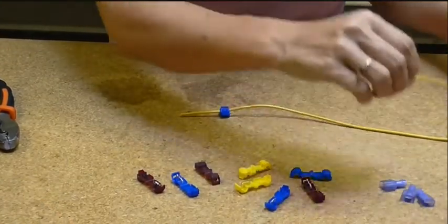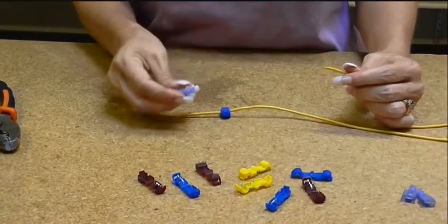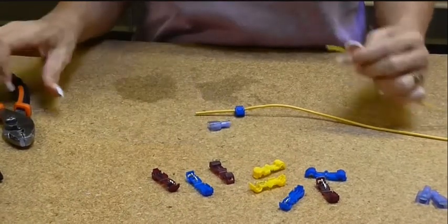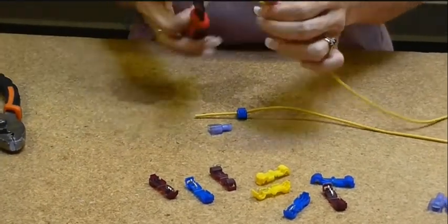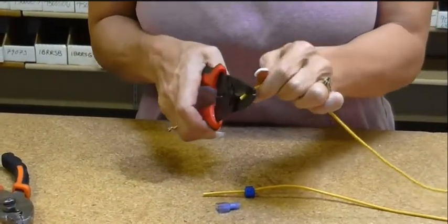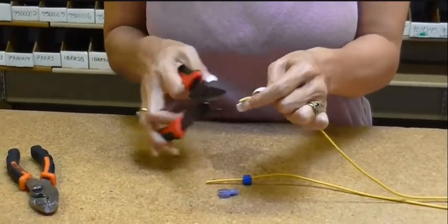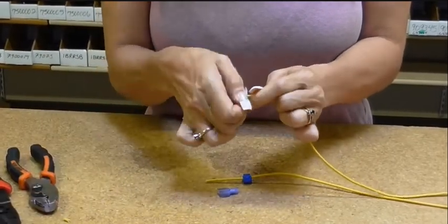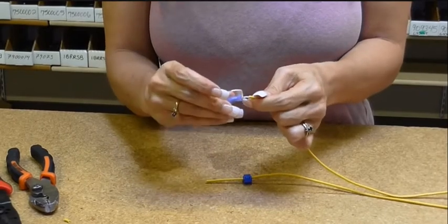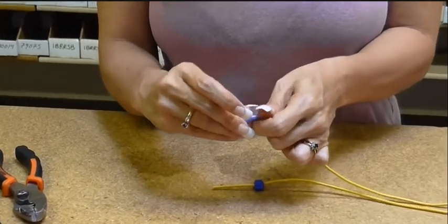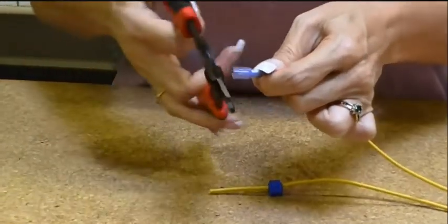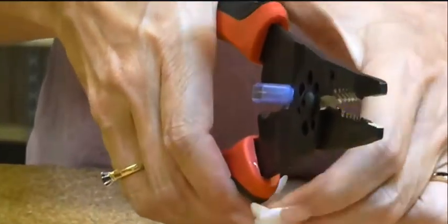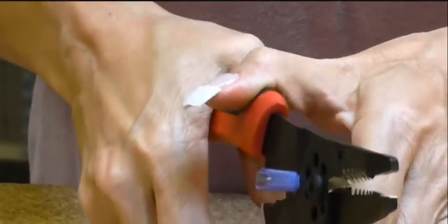Next we're going to put on a male insulated quick connect. We're going to take the jacket off the primary wire, strip it, put it in the connector, squeeze.